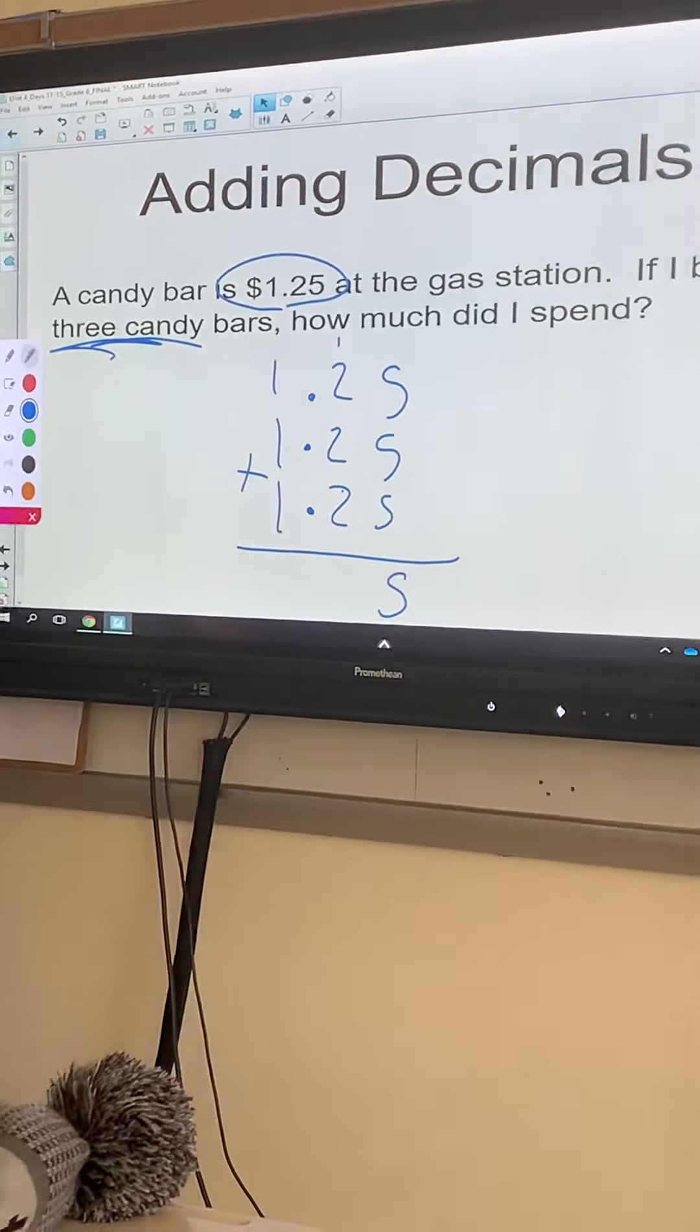0 plus 1 plus 0 is 1. 0, 2, and 0 is 2. 6 and 5 is 11, plus 8 is 19. Carry the 1. Don't forget about the decimal, dropping that down. 0 and 3 is 3, and 9 is 12, plus the 1 up top is 13.